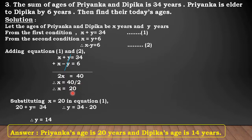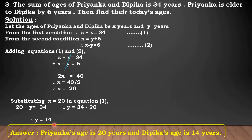Now, substituting X equals 20 in equation 1, we get 20 plus Y is equal to 34. Therefore, Y is equal to 34 minus 20, which equals 14. Therefore, the age of Deepika is 14 years. Answer: Priyanka's age is 20 years and Deepika's age is 14 years respectively.